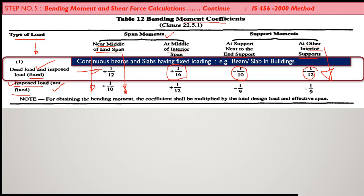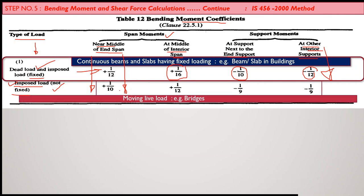To summarize from Table 12: for continuous beams and slabs with fixed loading as in a building, use those highlighted coefficient values. For moving loads as in bridges, use the corresponding values for movable loads. The approximate method given by IS 456 allows you to take these coefficient values from Table 12 for calculating bending moments.